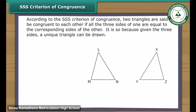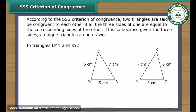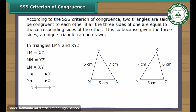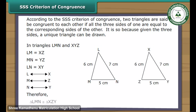SSS criterion of congruence: according to the SSS criterion, two triangles are said to be congruent to each other if all three sides of one are equal to the corresponding sides of the other. It is so because, given the three sides, a unique triangle can be drawn. In triangles LMN and XYZ, side LM is equal to side XZ, side MN is equal to side YZ, and side LN is equal to side XY. Vertex L corresponds to vertex X, vertex M to vertex Z, vertex N to vertex Y. Therefore, triangle LMN is congruent to triangle XZY.